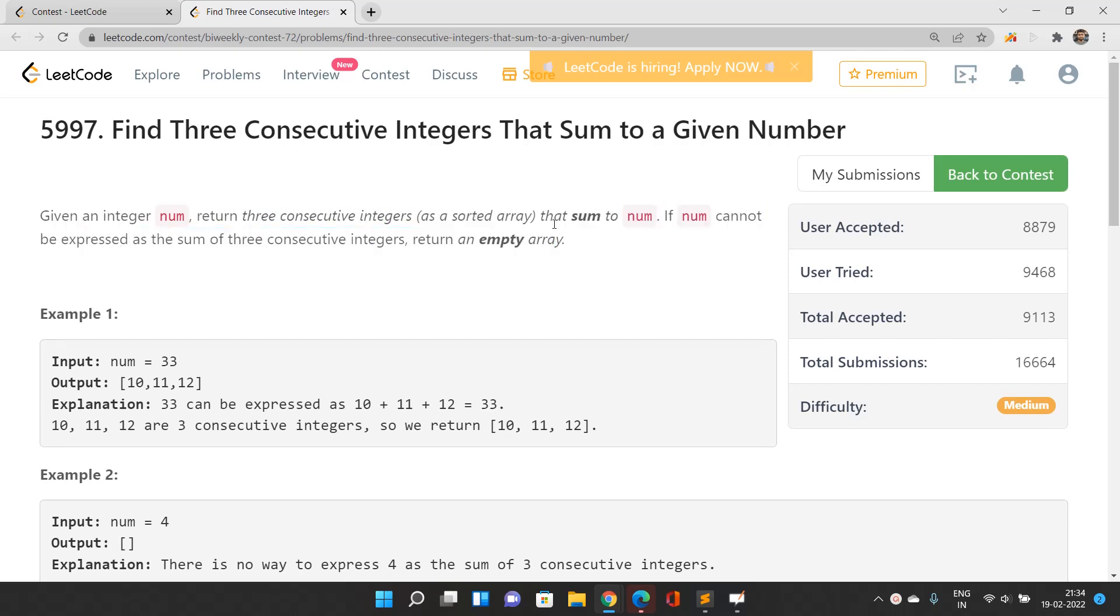If there's a possibility that you're not going to have some valid three consecutive integers, then in that case what you're going to do is return an empty array - that would be your answer.